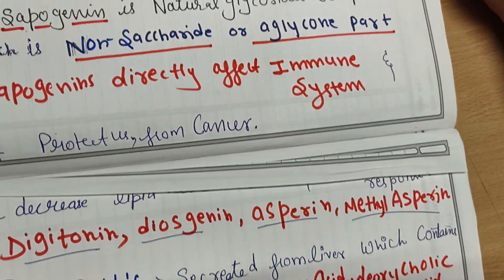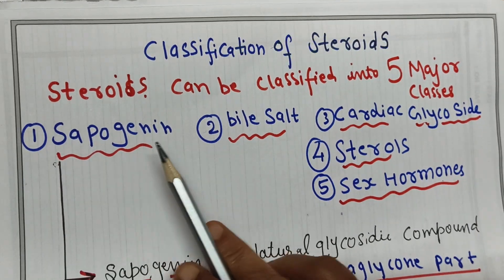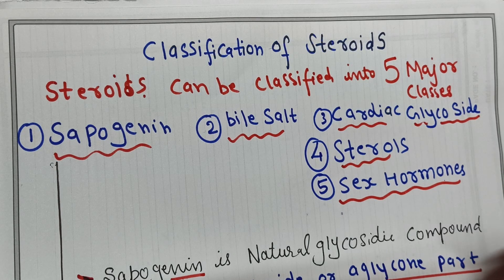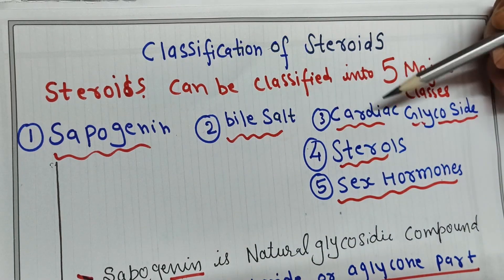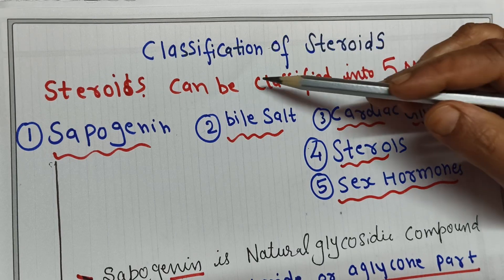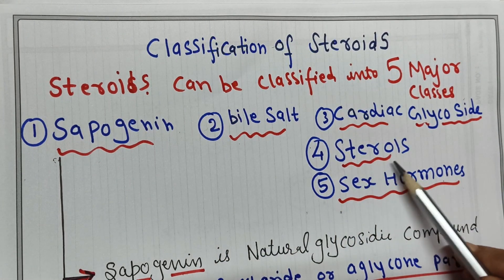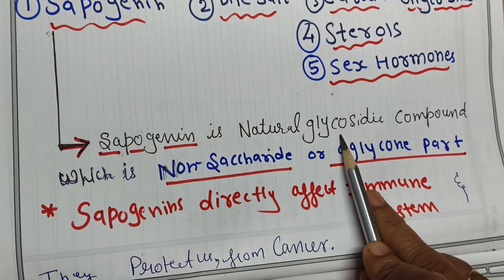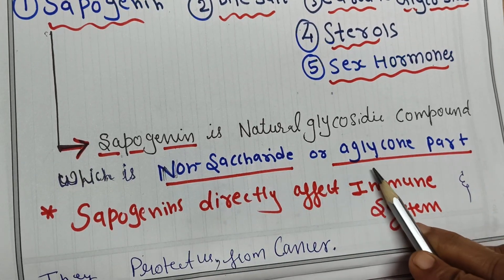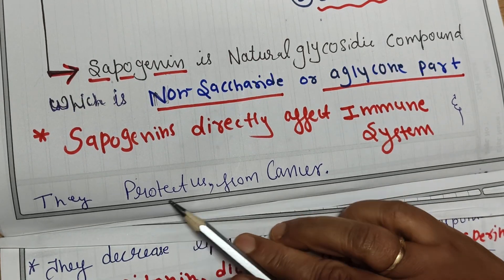Steroids are classified into five major classes: sapogenins, bile salts, cardiac glycosides, sterols, and sex hormones. Sapogenins are natural glycosidic compounds representing the non-saccharide or aglycone part. They directly affect the immune system, protect from cancer, and boost immunity against various lifestyle diseases such as cancer and other infections.